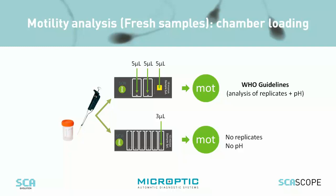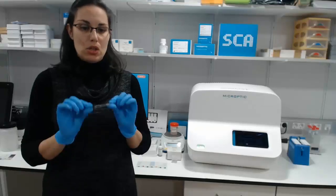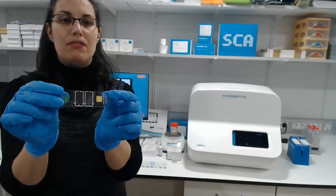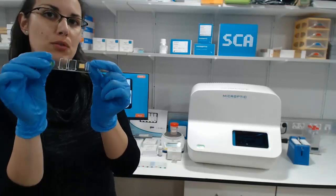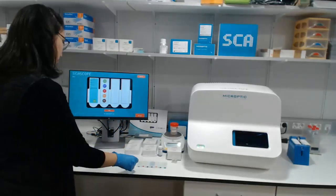There is also the possibility to use another type of counting chamber that allows loading samples from six different patients. In that case, you will optimize the use of these slides, but it is not possible to automatically do replicates or automatically measure the pH. Here is one example of these slides, which we will load with our sample.